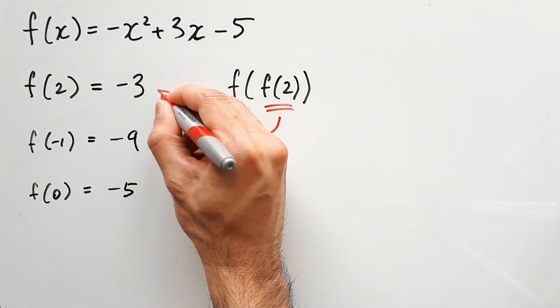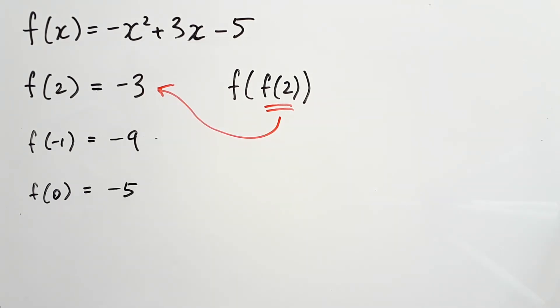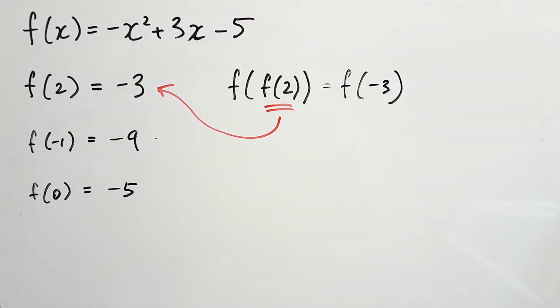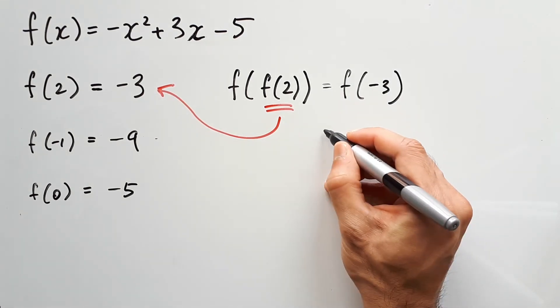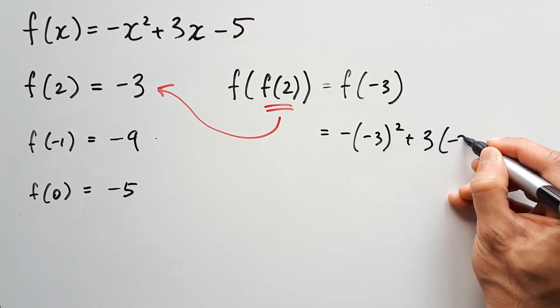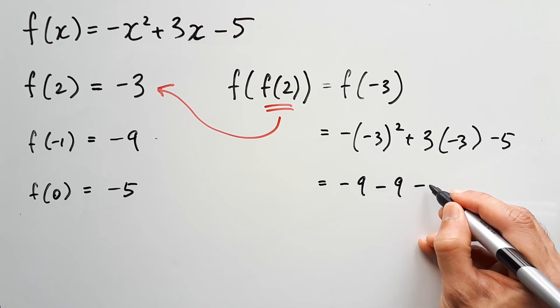f of 2 is negative 3, right? So just replace that for that outcome. Now we have f of negative 3. And from here, you just rinse and repeat what you've been doing this whole time, just putting in negative 3 where all the x's are. Work that out and we'll get negative 23.